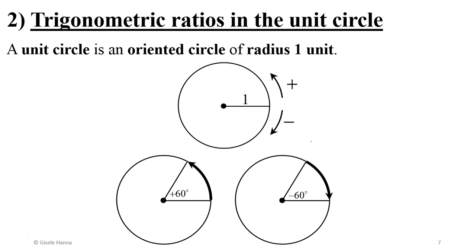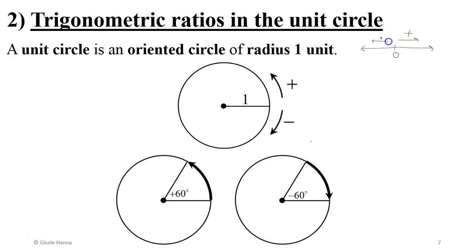What is an oriented circle? Similarly to number lines — which are straight lines over which you include a sense of orientation, with an origin, a positive sense to the right and a negative sense to the left — an oriented circle is a circle over which you include a sense of orientation.